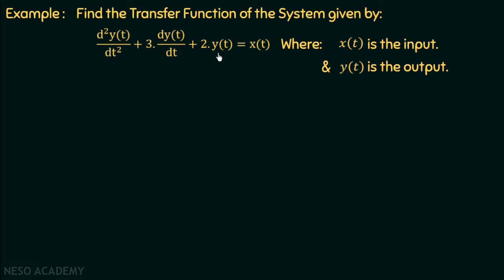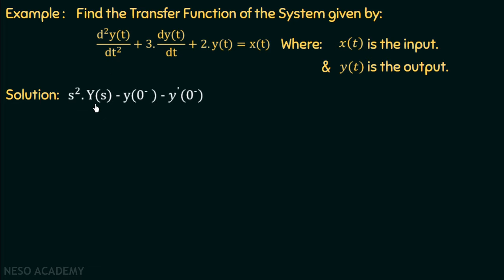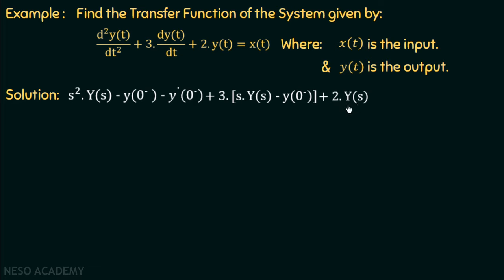We know the transfer function is the Laplace transform of output to the Laplace transform of input. Taking the Laplace transform on both sides, the Laplace transform of d²y(t)/dt² by the time differentiation property is s²Y(s) − y(0⁻) − y'(0⁻). Similarly, the Laplace transform of dy(t)/dt is sY(s) − y(0⁻), multiplied by 3. By the homogeneity principle, 3 is multiplied in the Laplace transform as well. The Laplace transform of 2y(t) is 2Y(s), and the Laplace transform of x(t) is X(s). In this way, we have converted the differential equation to its Laplace domain.